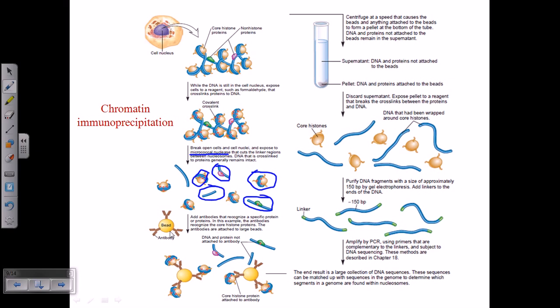The bead has a higher weight. After centrifugation of this whole mixture, the histone core proteins attached to the bead-coated antibody will be there as a pellet. The rest, like only DNA and non-histone proteins with DNA, will be in the supernatant. We will discard the supernatant.